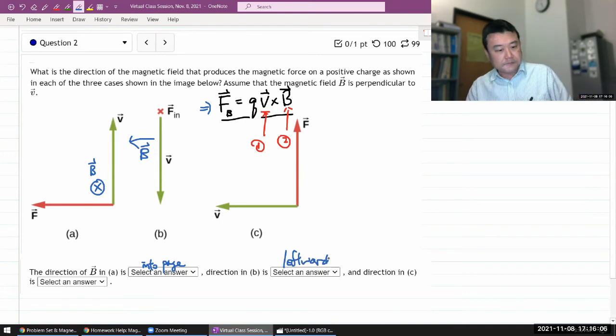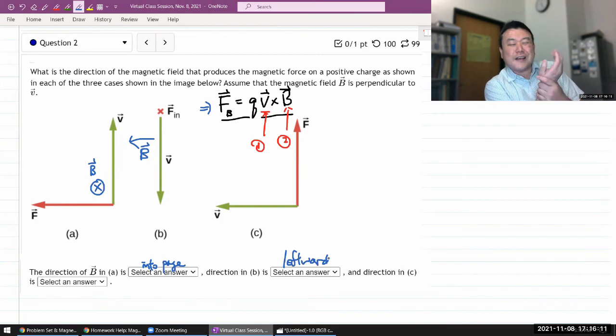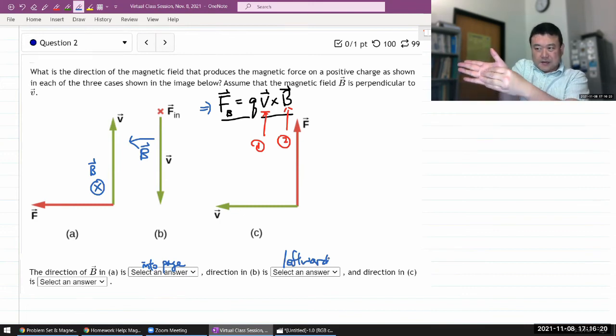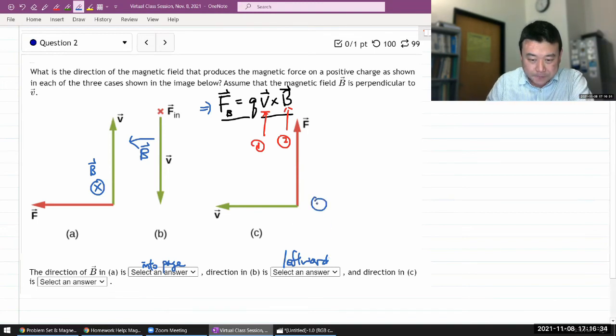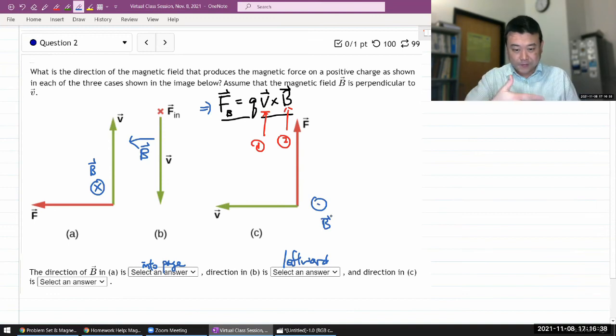And for part C, my velocity is, okay, I need to flip. Okay, my velocity is pointing to left. Okay. And I want my force to point up. So, I want my thumb to point up. So, okay, in this direction, when I do, for my fingers, it's pointing from your perspective out of screen. So, V cross B. Okay. So, I want B to point out of screen here. Let me just double check from my perspective. V cross B. Okay. Yeah.